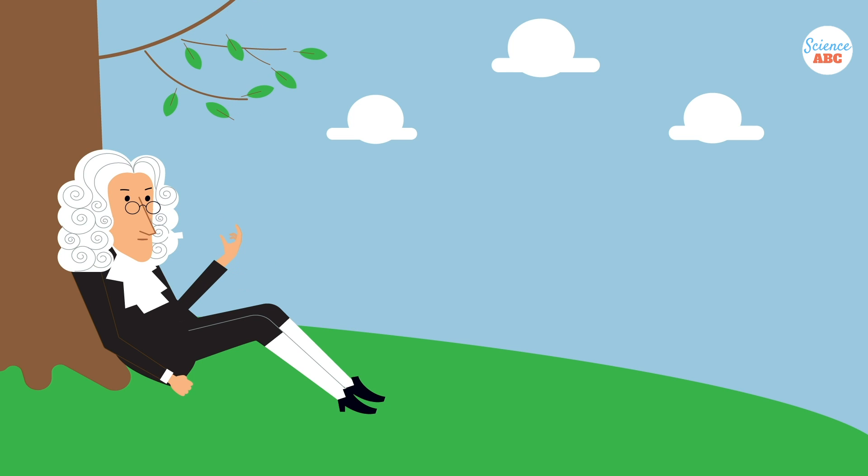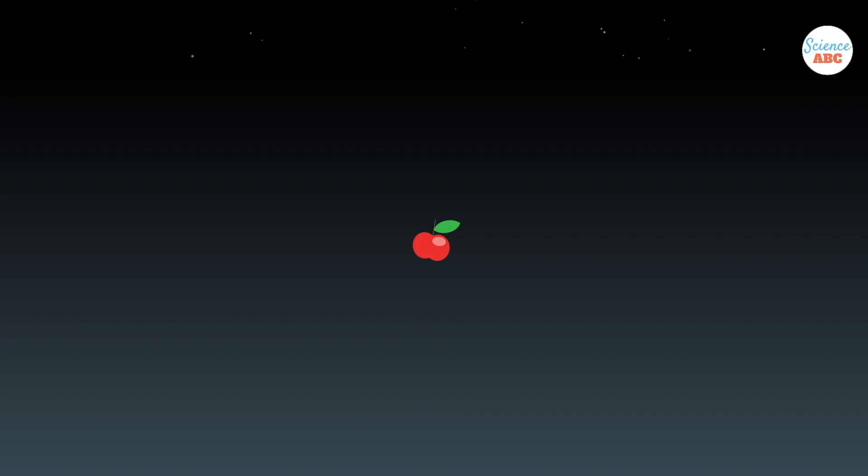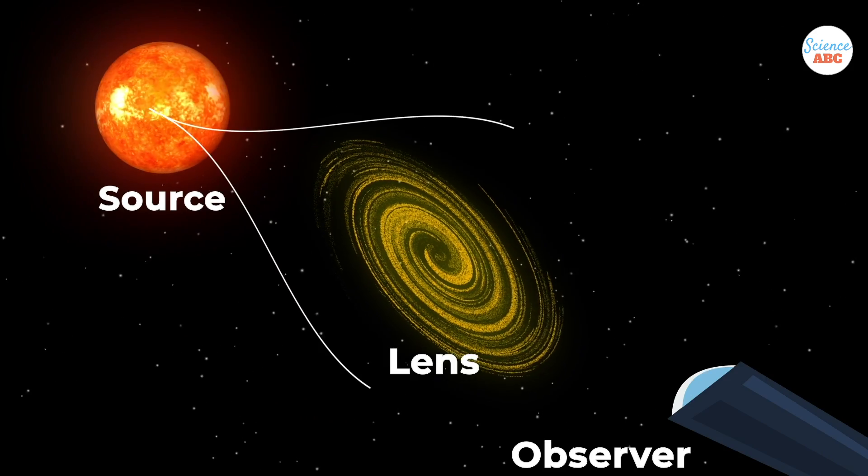To use gravity as a lens, we need three things: the source, the lens, and the observer.